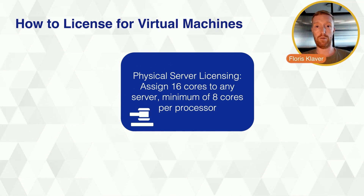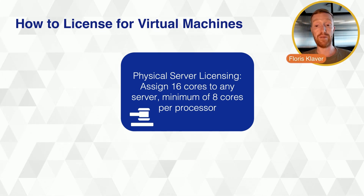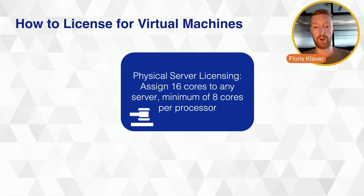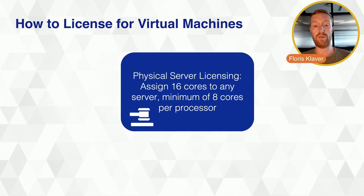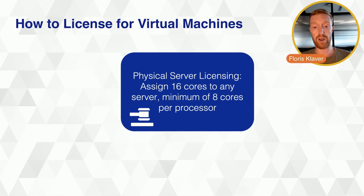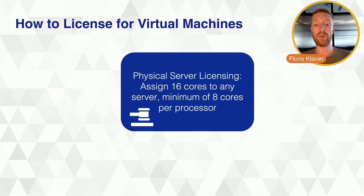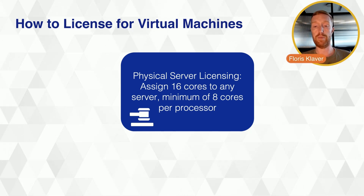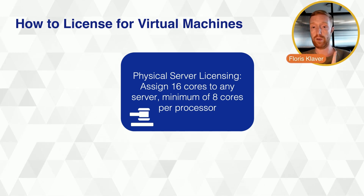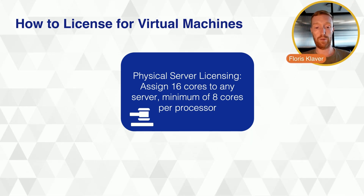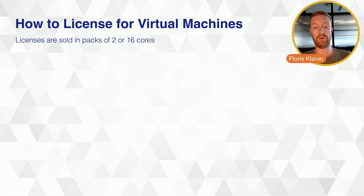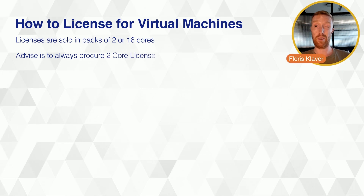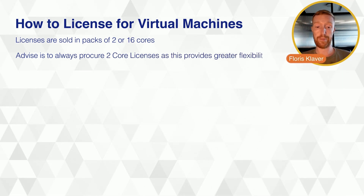Virtual machine licensing is different. Microsoft has referenced the Azure Hybrid Benefit model, where the minimum core count per VM is eight licenses per virtual operating system environment. There was previously a minimum of 16 cores per customer, but that has been removed, so you can now license just one VM this way. Licenses are still sold in packs of two or 16 cores for Windows Server.